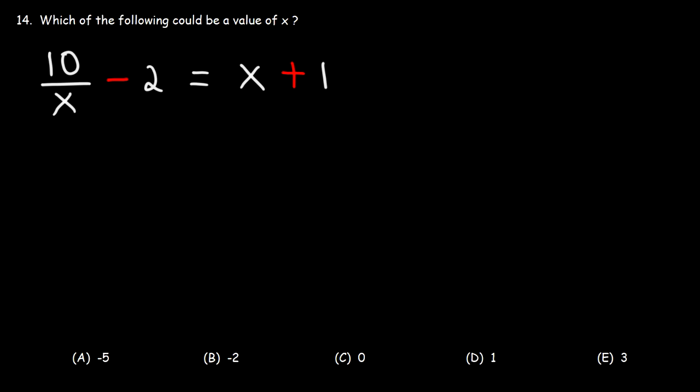Well, what I recommend doing is getting rid of the fraction. So let's multiply everything by x. So 10 over x times x, the x variables will cancel, giving us just 10.